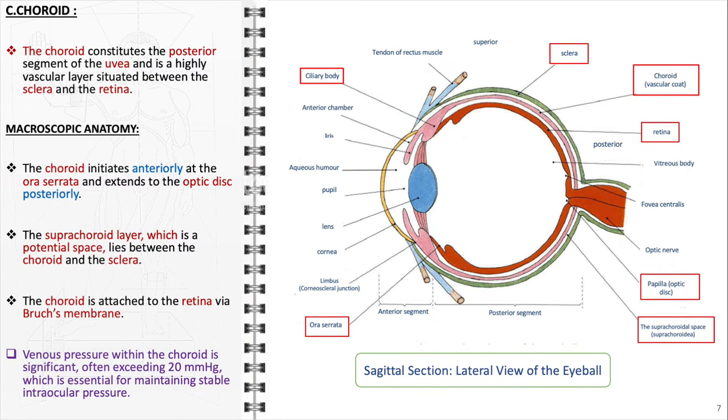The venous pressure in the choroid is notably high, commonly surpassing 20 mmHg. This pressure gradient is vital for counteracting the fluid pressure within the eye, thereby contributing to the equilibrium that results in a stable intraocular pressure. Such stability is paramount for the eye's structural integrity and optimal visual function.